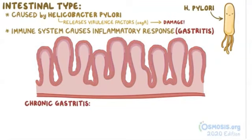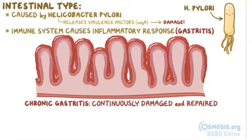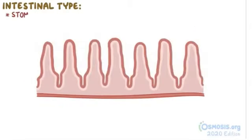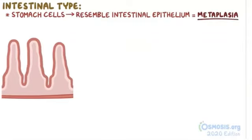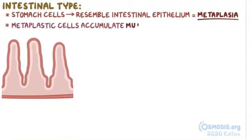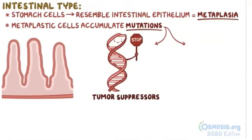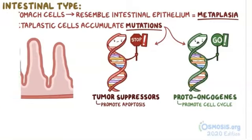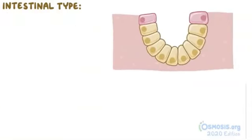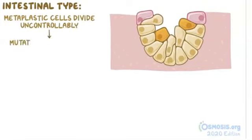When this happens, the normal epithelium of the stomach gets continuously damaged and repaired. Over time, the stomach cells in the epithelium change and start to resemble intestinal epithelium. This is called metaplasia, which is when one type of cells in the body changes to resemble cells in another part of the body. Over time, these metaplastic cells might accumulate mutations in the genes that are in charge of the cell cycle and cell division. Tumor suppressor genes, which normally code for proteins that stop the cell cycle or promote apoptosis, are the cell cycle's very own brake pedal, while proto-oncogenes, which normally code for proteins that promote the cell cycle, are the cell cycle's accelerator pedal. Mutations can occur in both, causing metaplastic cells to start dividing uncontrollably, and more mutations accumulate with each division.